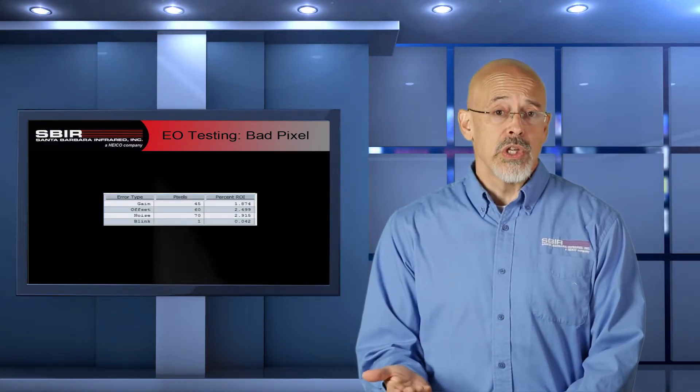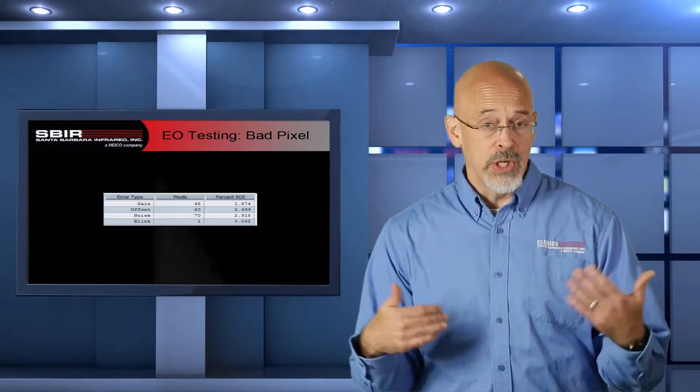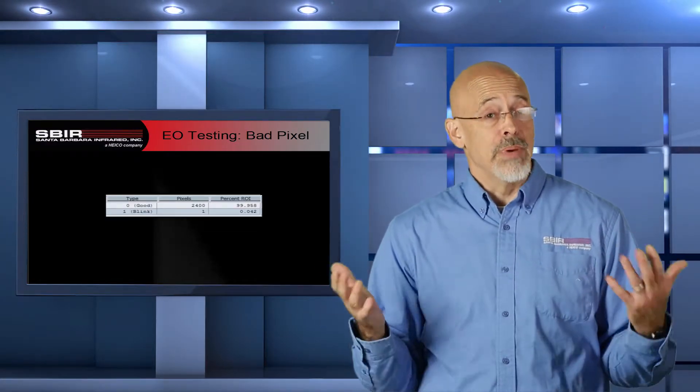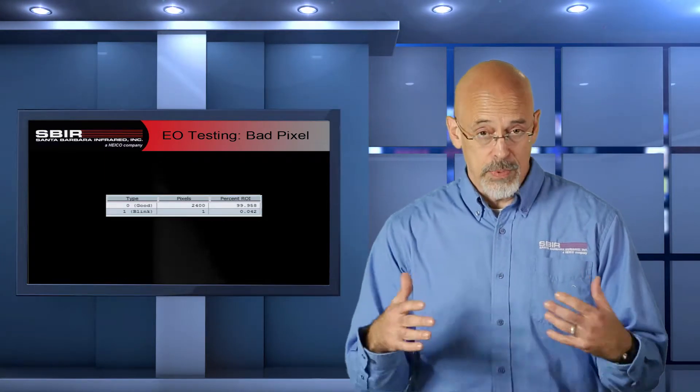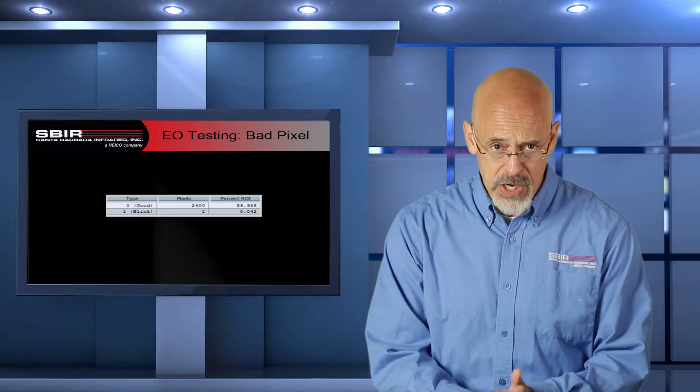Similarly, we're going to do this with the offset and with the noise on each pixel. And finally, we'll do a measurement on whether or not that pixel has ever blinked or not. So each pixel is going to get measured in terms of those four criteria to determine an overall set of failed pixels, from which we can do some basic statistical analysis. What's the percentage of good pixels and the percentage of bad pixels? And in some cases, that's a good enough measurement.